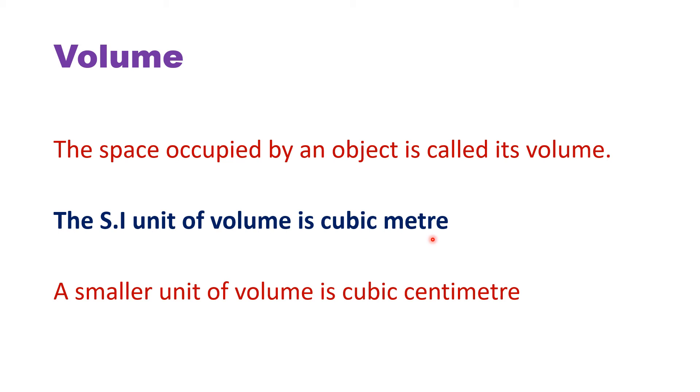Then we have volume. This physical quantity volume is a little bit new to you. Volume means the space occupied by a body. Like if we go and sit on a chair, we are occupying a space on the chair. So that space occupied by any body is called its volume. The space occupied by an object is called its volume. The SI unit of volume is cubic meter. So cubic meter means meter three times, meter into meter into meter.